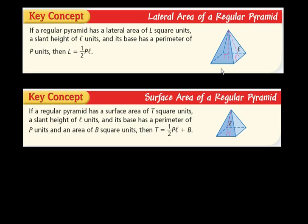The lateral area of a regular pyramid. This regular pyramid has a lateral area of L square units, a slant height of ℓ units, and its base has a perimeter of P units. The formula for the lateral area of a regular pyramid is L equals one-half P times ℓ. One-half the perimeter. You take the perimeter and multiply it by the slant height, ℓ.